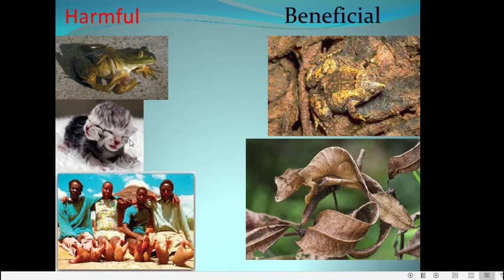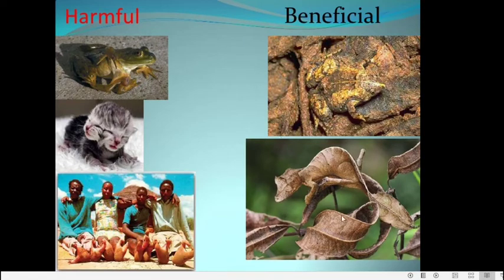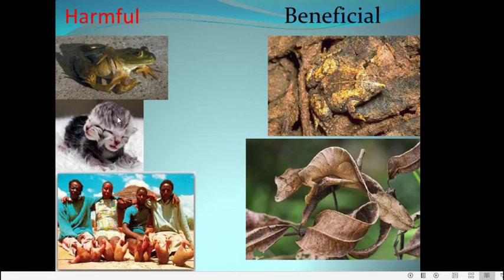Some mutations have led to morphological deformities that reduce reproductive fitness and survival value — these are harmful mutations. Some beneficial mutations give camouflage or concealment in respective environments, such as an amphibian adapting to the appearance of its environment, and a reptile adapted through camouflage. These are all beneficial mutations.